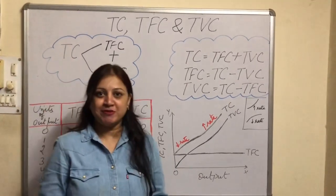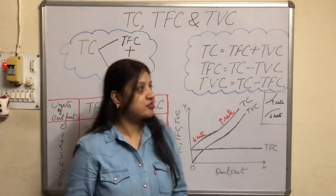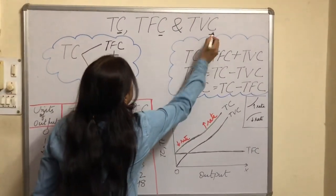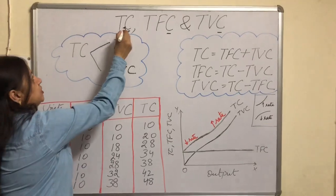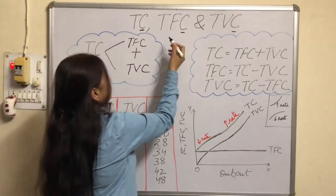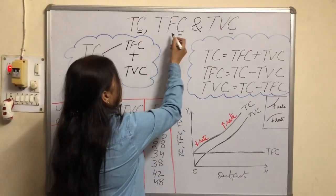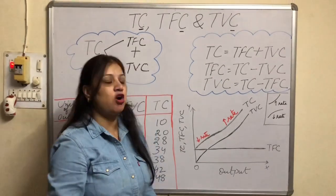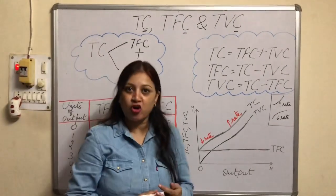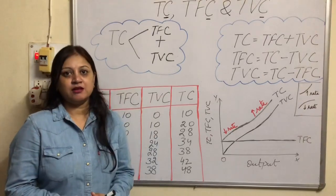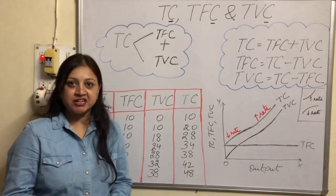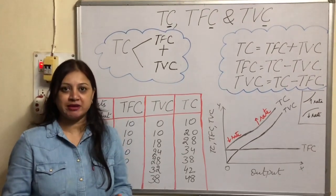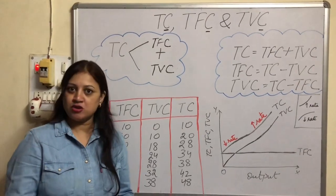Before telling the relationship, I want to tell you what is cost, because in every term you will see the C — total cost TC, total fixed cost TFC, total variable cost TVC. So you should know the meaning of cost first of all. Cost refers to total expenditure incurred in the production of a commodity — whatever expenditures are being done to produce a commodity is known as cost.